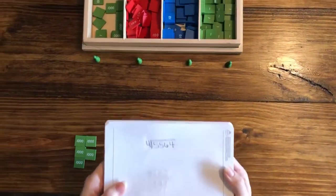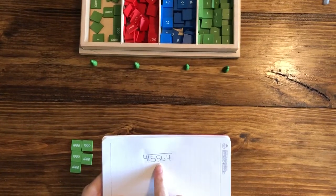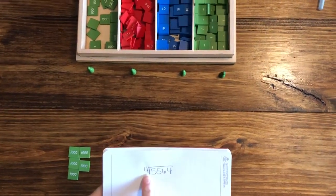All right, so I'm going to show you a stamp game division problem. I'm going to show you 5,564 divided by 4.